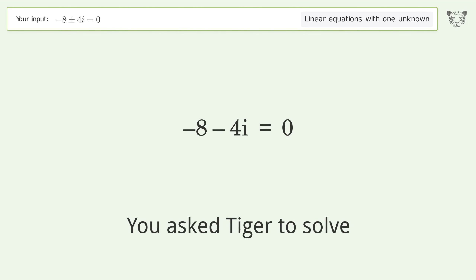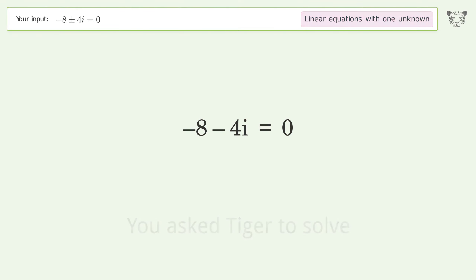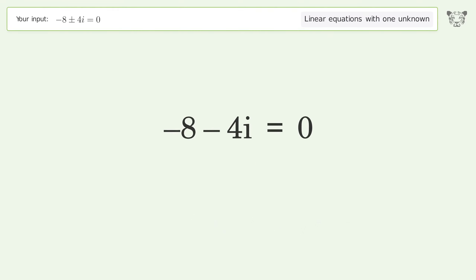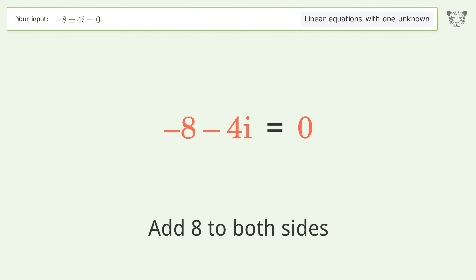You asked Tiger to solve this — it deals with linear equations with one unknown. The final result is i equals negative 2. Let's solve it step by step. Group all constants on the right side of the equation: add 8 to both sides.